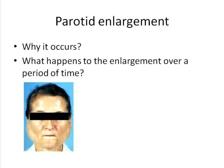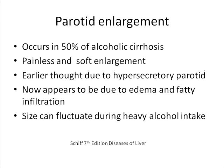Parotid enlargement in liver disease — we need to know at least two things: the reason for it to occur, and what happens to the enlargement over a period of time. Parotid enlargement is a very common problem we see in a spectrum of diseases. There are conditions with unilateral parotid enlargement and conditions with bilateral parotid enlargement, which can be acute or chronic. In the setting of liver disease, it occurs predominantly in alcoholics.